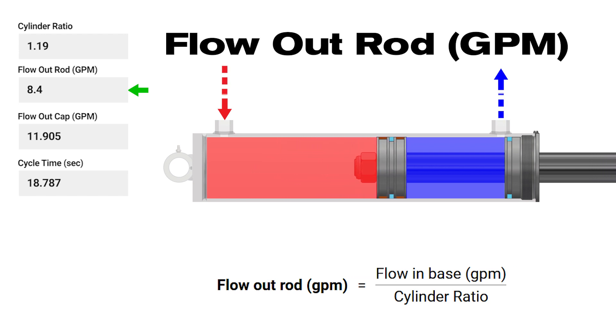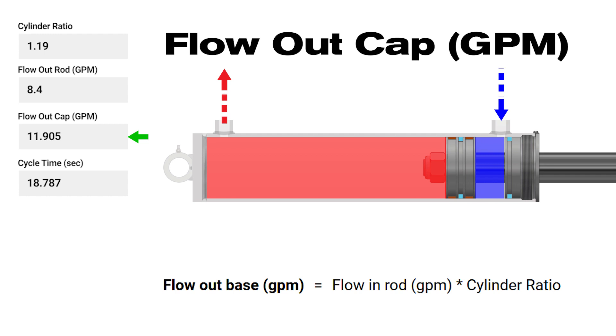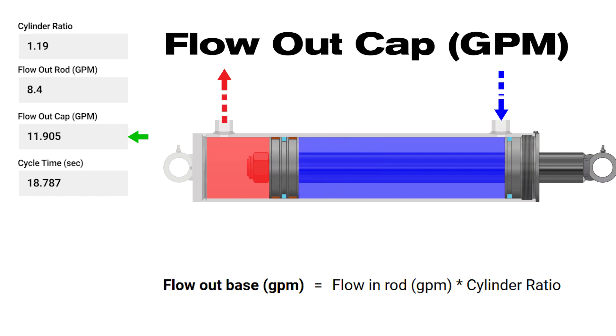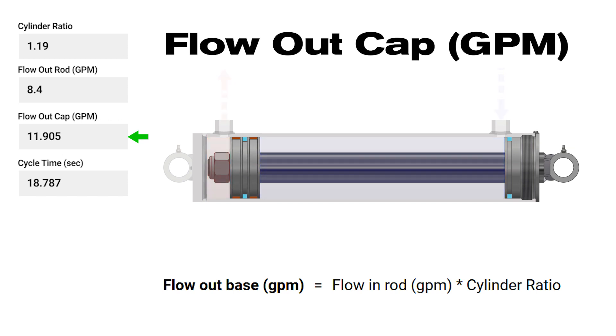When a cylinder is extending at a given flow rate, the flow rate out the rod side is lower. Conversely, when a cylinder is retracting, the flow out the cap or extend side is greater. These values are helpful in correctly sizing other components in the system including valves, filters, and hoses.